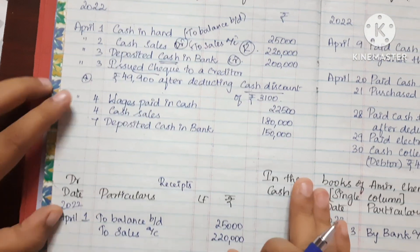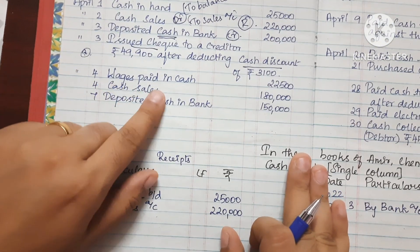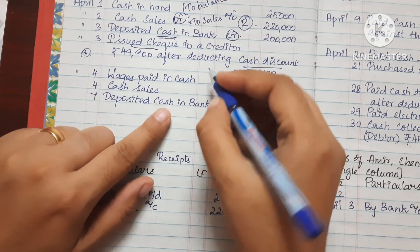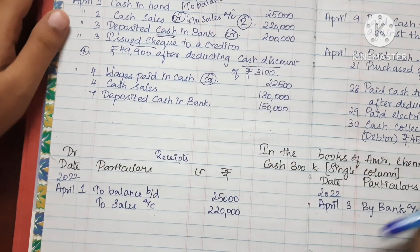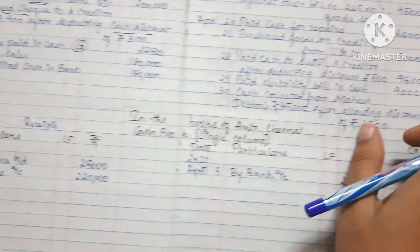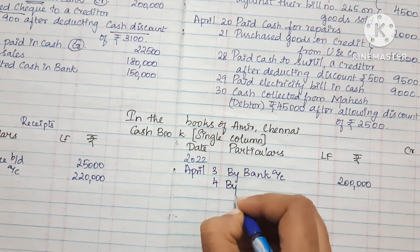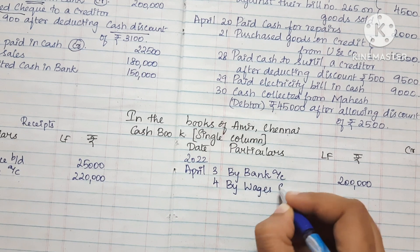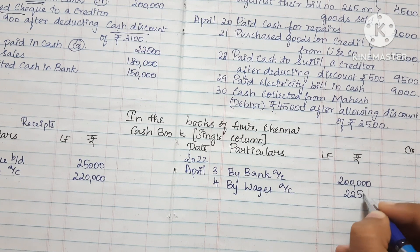The next transaction is wages paid. How do we record this on the credit side? The date is the 4th or 5th. The entry is: By Wages Account. The amount is Rs. 22,500.